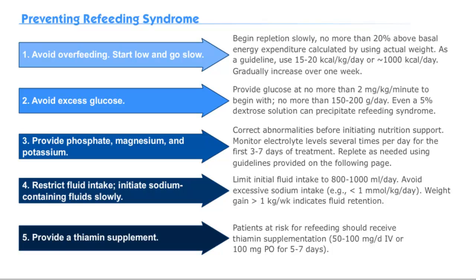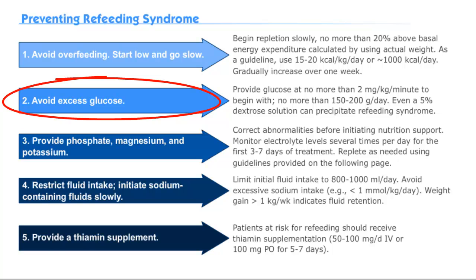So let's take a look at how to prevent refeeding syndrome. Patients should not receive more than 20% above their basal energy expenditure. Typically, we want to dose around 1,000 calories per day and gradually increase over one week. Next, patients should avoid excess glucose — no more than 2 milligrams per kilogram of body weight per minute, which is around 200 grams per day.